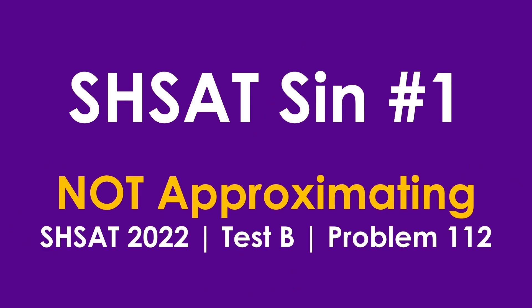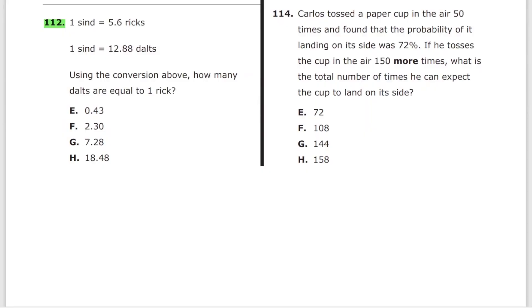SHSAT sin number one is not approximating. We are going to cover problem number 112 from test B of SHSAT 2022. One sind is equal to 5.6 rigs, one sind is equal to 12.88 dolts. Using the conversion above, how many dolts are equal to one rig?